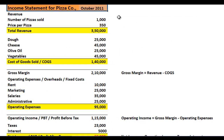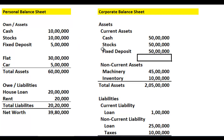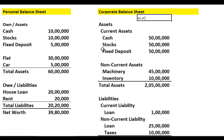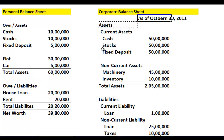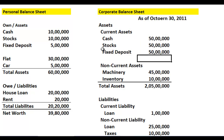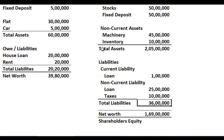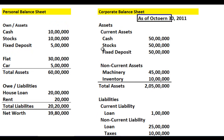One important thing to know: an income statement is always for a period of time — a month, a year, or a day. A balance sheet, however, is never for a period of time. A balance sheet is the status of a company on one specific date. For example, this company's balance sheet is as of October 30th, 2011, meaning on that date it had 50 lakhs of cash, 50 lakhs in stocks, 50 lakhs in fixed deposits, 2 crores in assets, 36 lakhs in liabilities, and 1.69 crores in shareholders' equity.